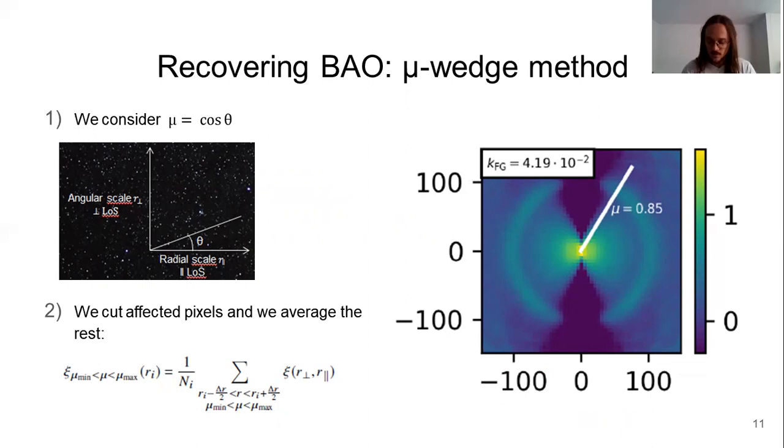An example. Here, we are cutting the region of above mu equals 0.85, and we are keeping with the rest. And with the rest of the information, we average pixels that have the same distance to the center, which is done by this formula below.